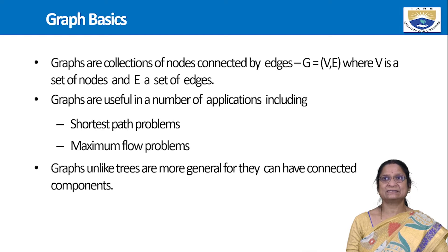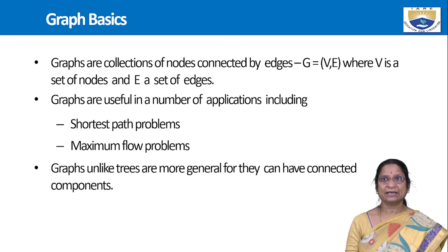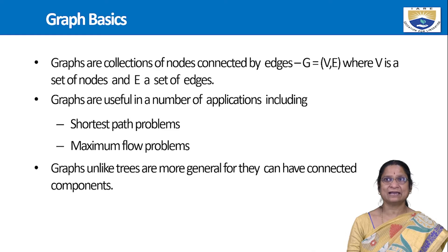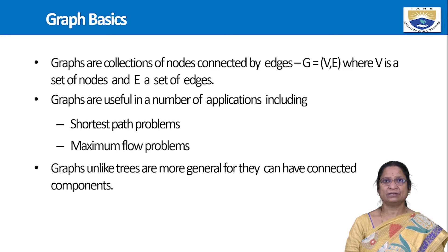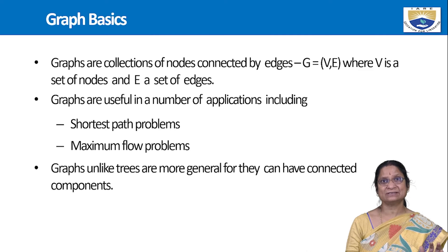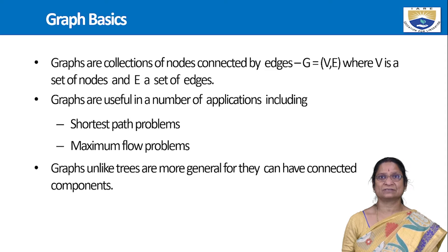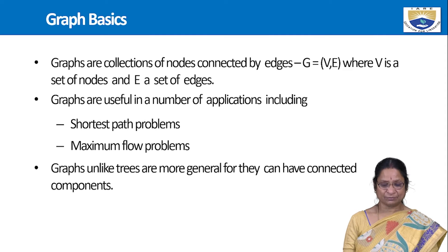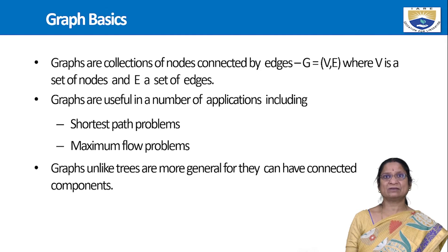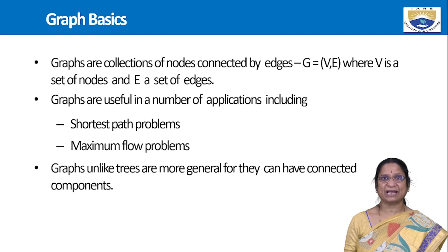Let me first revise graph basics. A graph is defined as a collection of nodes connected by edges. G is defined as a pair of two sets V and E, where V is the set of vertices and E is the set of edges. Graphs are very useful in daily life and in computer science — shortest path problems, maximum flow problems, and network-related problems are all considered applications of graphs.